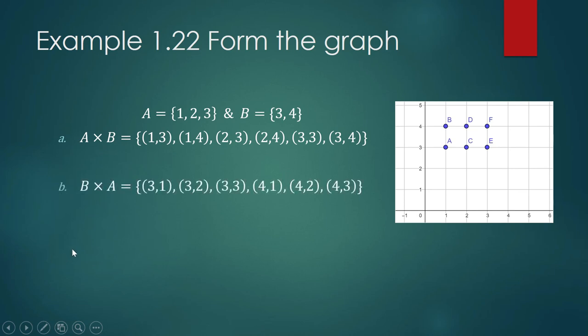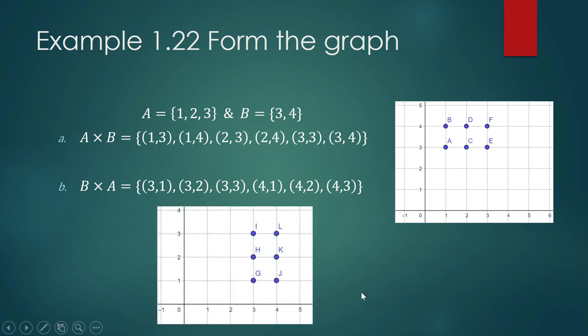How about B cross A? The first coordinates must come from B and the second must come from A. Let us write down all possible pairings: (3,1), (3,2), (3,3), (4,1), (4,2), (4,3). Let us plot that in our plane. This is your B cross A. This is the graph of your B cross A.